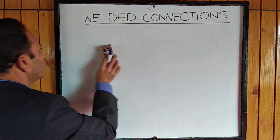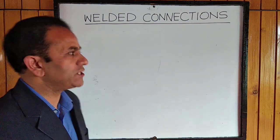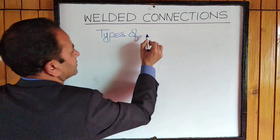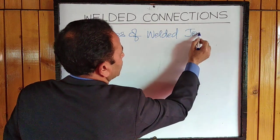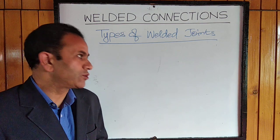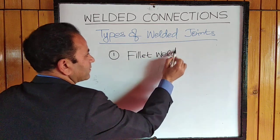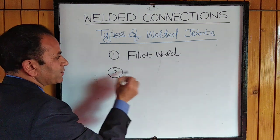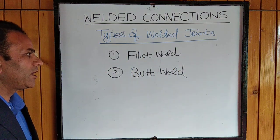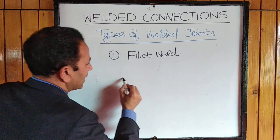Welding connects two or more members such that they form one unit and behave as a homogeneous member. Now let's see the types of welded joints or welded connections. Similar to riveted connections, there are two basic types: one is called the fillet weld and another is the butt weld. In a fillet weld, the members are lapped to each other.